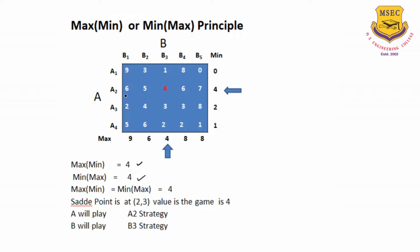Now from this example, max-min equals min-max equals 4. Both of them are the same. So we say that the saddle point is located at the second row and the third column, and the value of the game is 4. That means A will play A2 strategy, B will play B3 strategy, and the payoff is 4. So A will get a payoff of 4 and B will lose 4, meaning 4 plus minus 4 is nothing but 0. So this is the max-min principle.